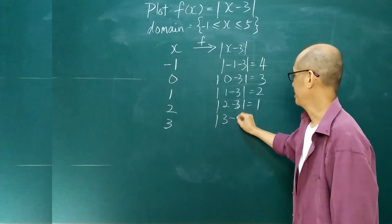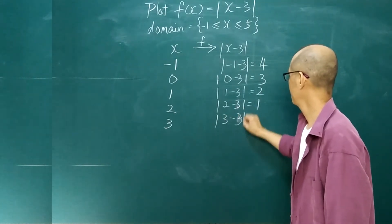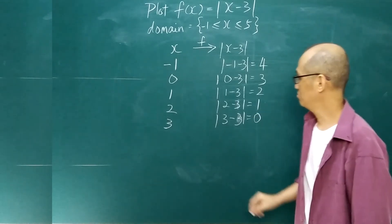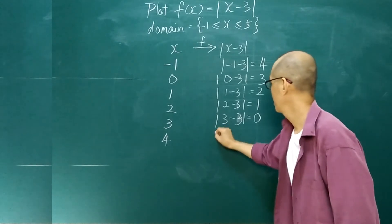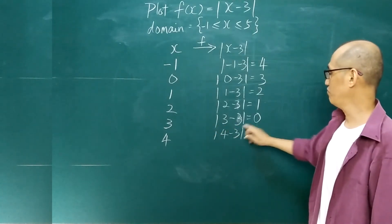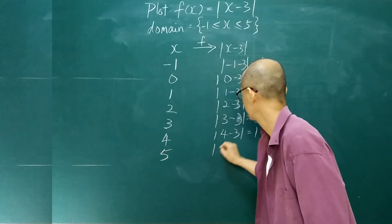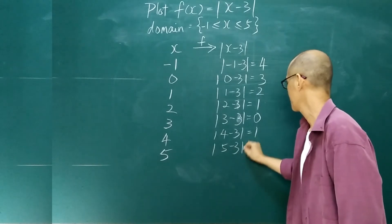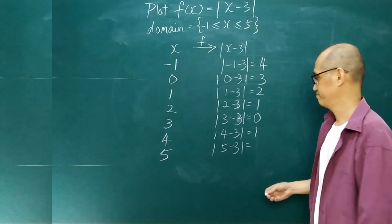When x is 3, we get 3 minus 3, which is 0. The absolute value of 0 is 0. When x is 4, 4 minus 3 is 1, and the absolute value of 1 is 1. When x is 5, 5 minus 3 is 2, and the absolute value of 2 is 2.